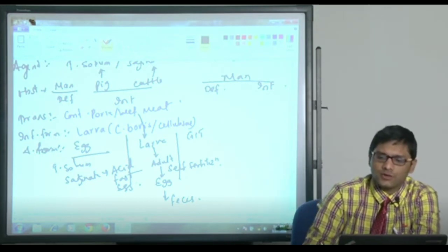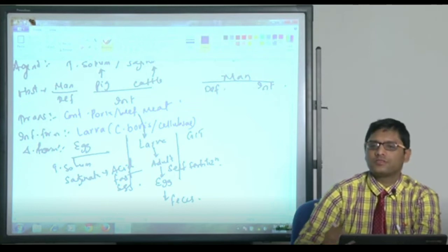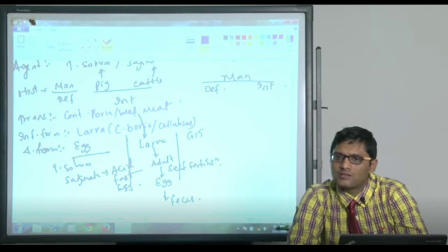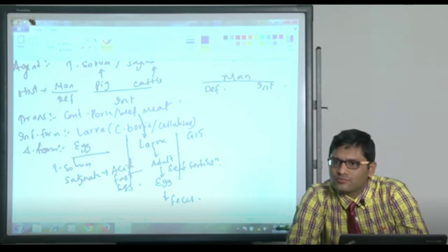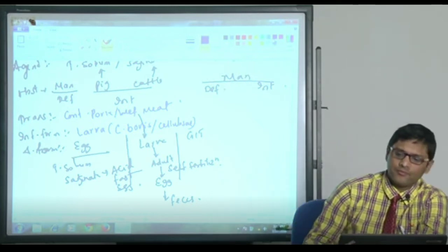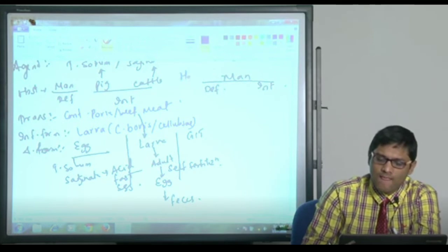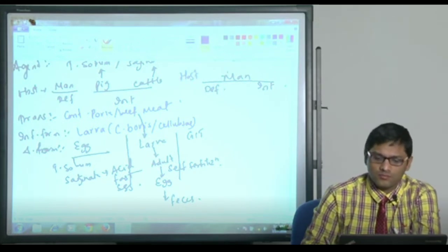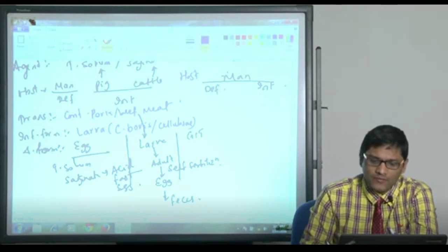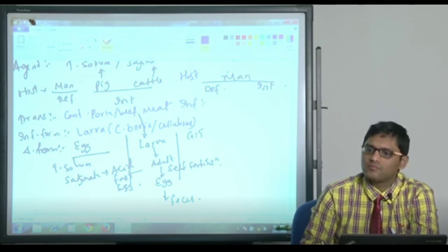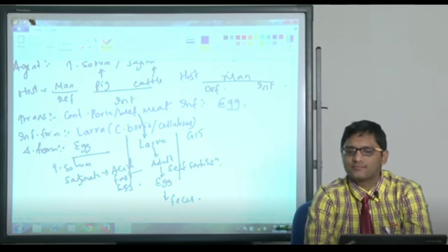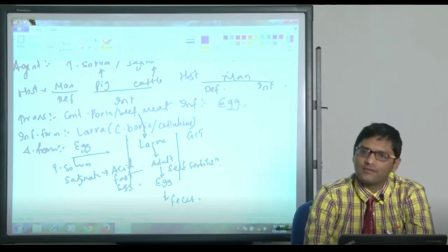Coming to cysticercosis, which is the agent? Only solium. Host: definitive host and intermediate host both are man. And infective form is eggs.